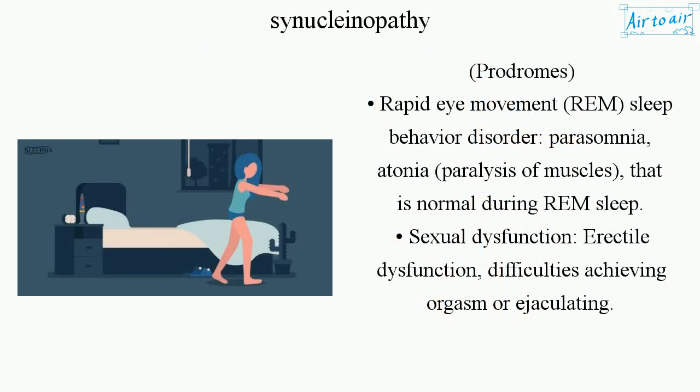Prodromes: rapid eye movement (REM) sleep behavior disorder. Parasomnia involves atonia — paralysis of muscles — that is normal during REM sleep.